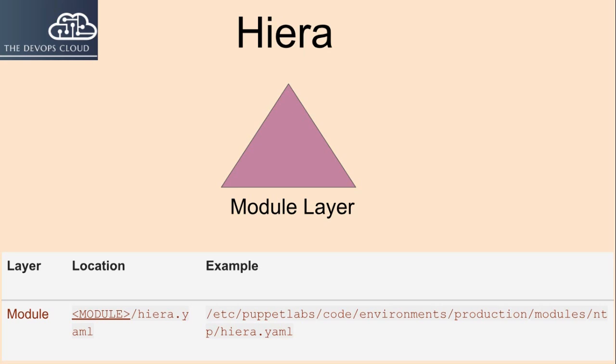The module layer. The configuration file for a module layer is located by default in a module's hiera.yaml — for example, if the module name is NTP, the file path will be /etc/puppetlabs/code/environment/production/modules/ntp/hiera.yaml. The module layer sets default values and merge behavior for a module's class parameters. It is a convenient alternative to the params.pp pattern. The module layer comes last in Hiera's lookup order, so environment data set by a user overrides the default data set by the module's author.